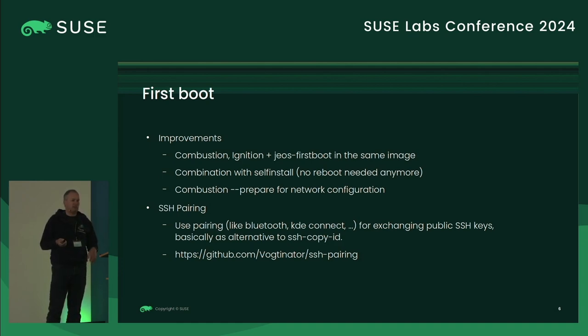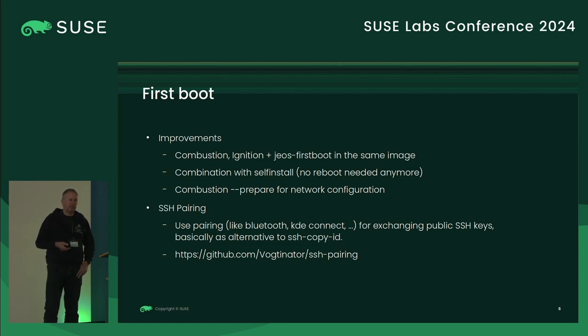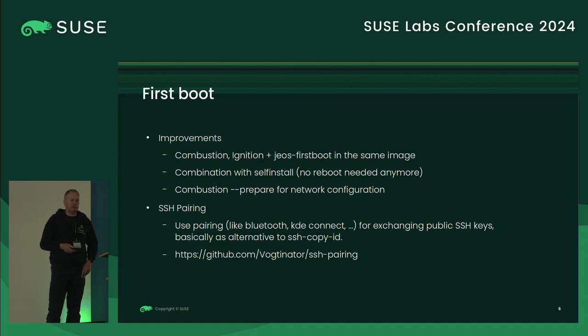Another nice feature is SSH pairing, which is currently being developed — we're still discussing with the Coolie team how to do it best. This means you don't need to copy your SSH public key to every machine, but like pairing, you connect with it and then say yes, it's my key, store it locally.